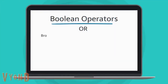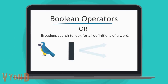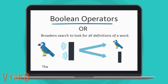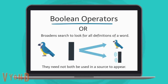The use of OR will broaden your search and is extremely helpful when searching for information using synonyms, such as either parrot or bird. They do not need to be used together or both appear in the information.